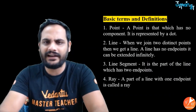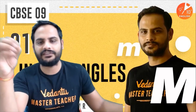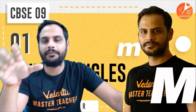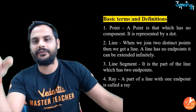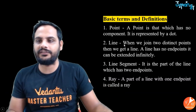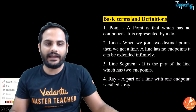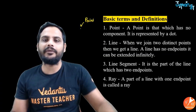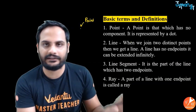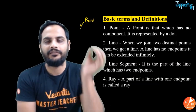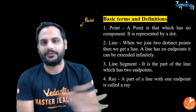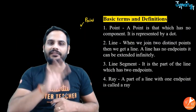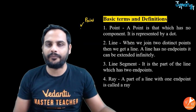We will start with basic terms and definitions. This chapter is all about lines and angles, and one important part is parallel lines. First: what is a point? A point is that which has no component — it is represented by a dot. A point is dimensionless; it does not have length, breadth, or height. One dimension means lines, two dimensions means surfaces, three dimensions are solids.